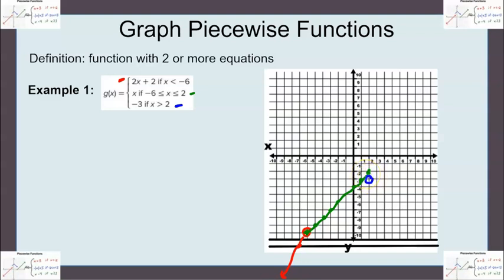But anything bigger than that, it's always going to equal negative 3. So that means this is going to be a horizontal line going to the right. And that would be my piecewise function.